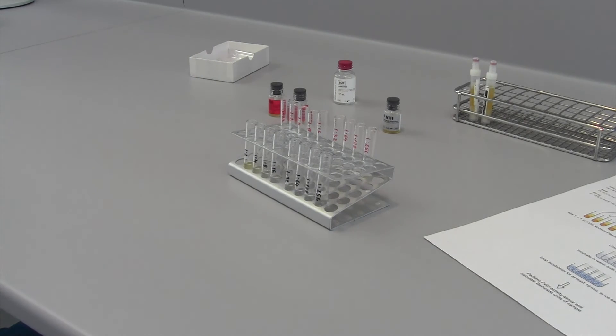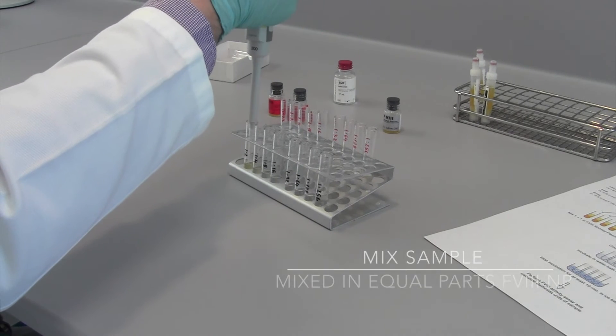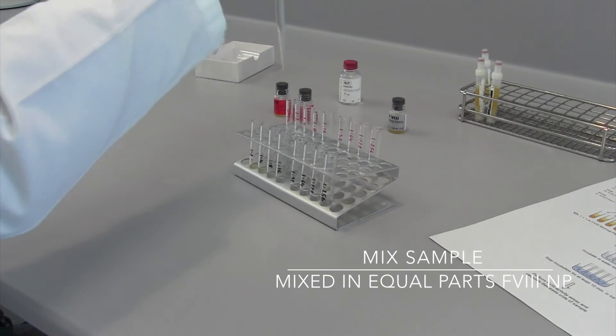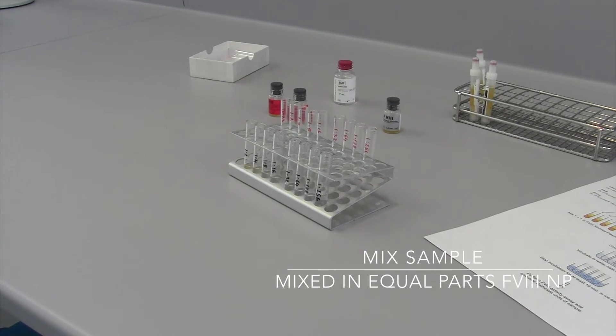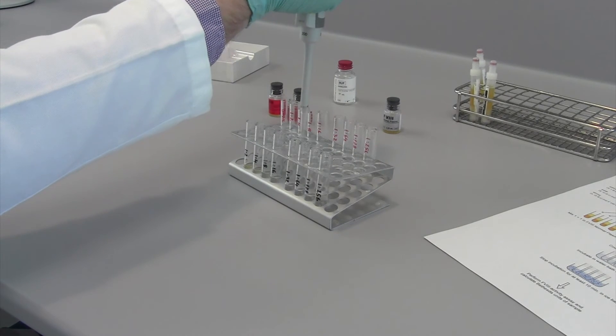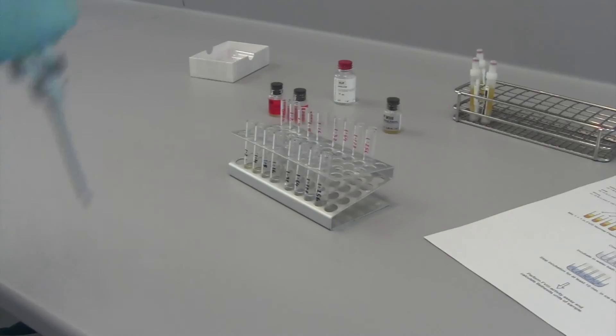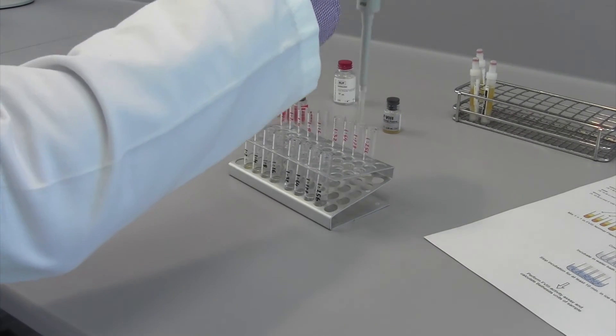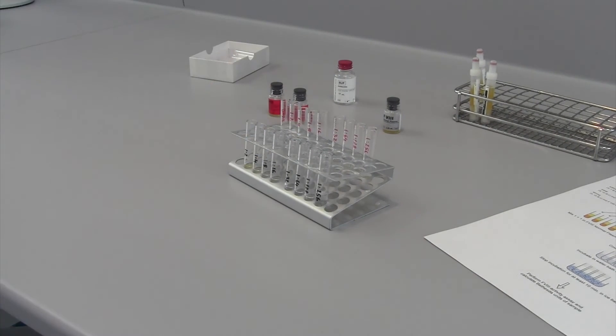For the undiluted samples, here indicated in red, add equal volumes of 100 microliters of your plasma sample to the Factor VIII normal plasma. Now, add equal volumes, in this case 100 microliters, to the respective tubes that already contain Factor VIII normal plasma.